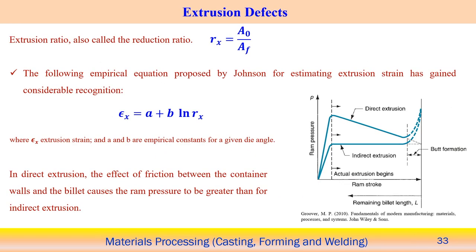The extrusion ratio is defined as A₀/Af — the ratio of initial to final cross-sectional area. The true strain in the extrusion process can be calculated using the empirical relation: strain = a·b + ln(Rx), where a and b are empirical constants depending upon the die angle.